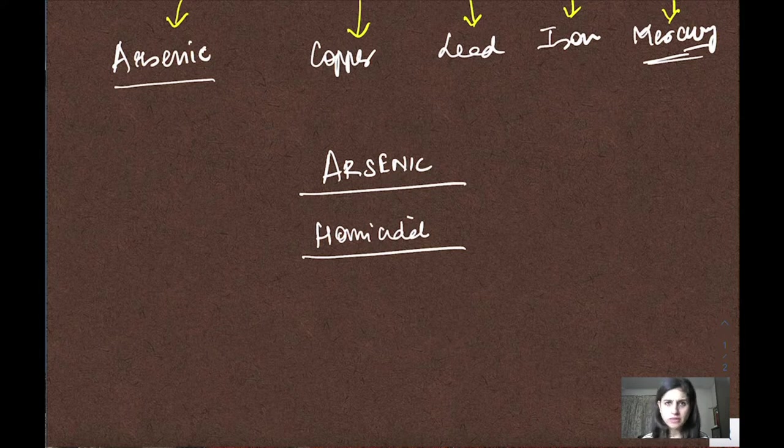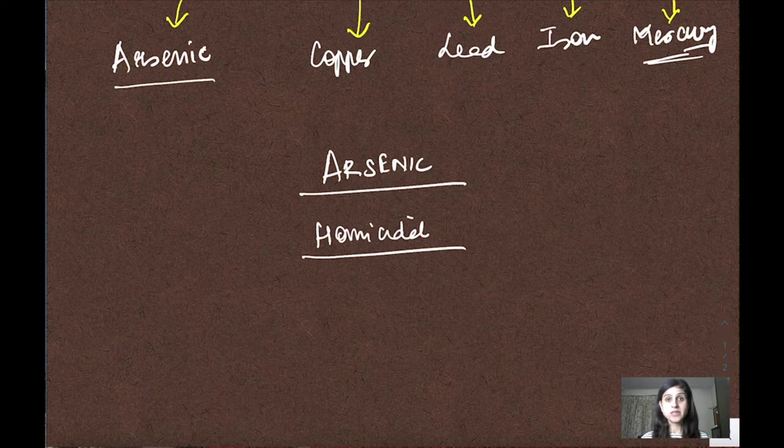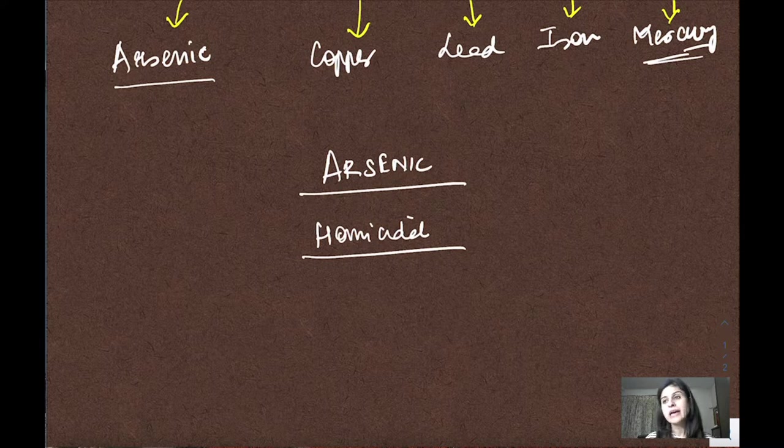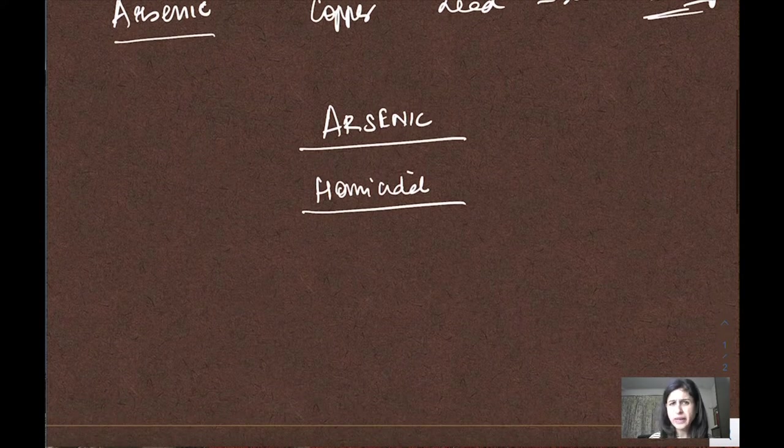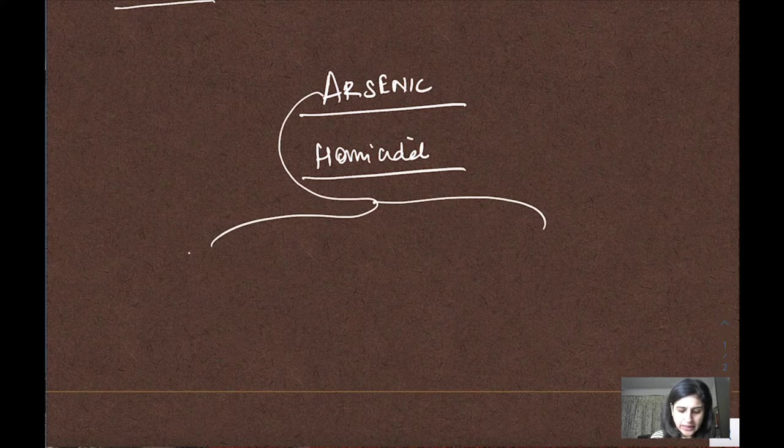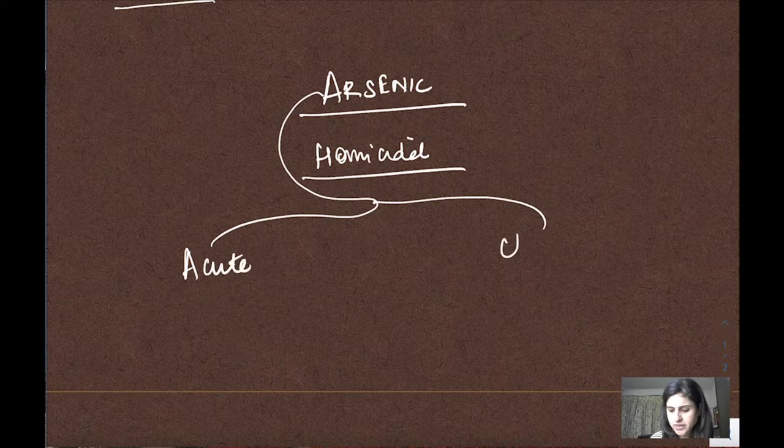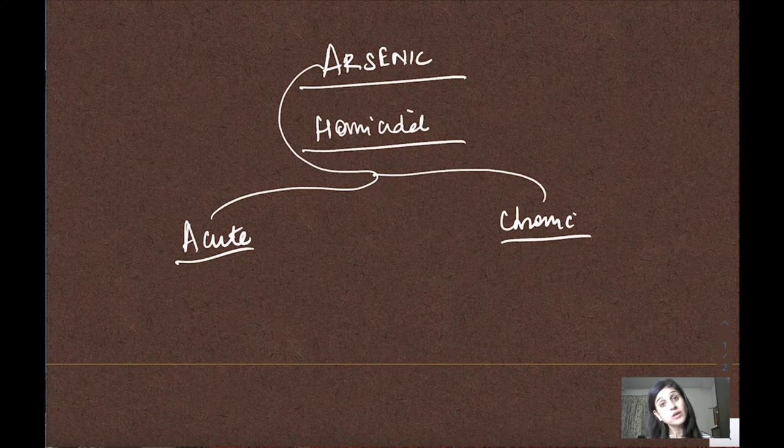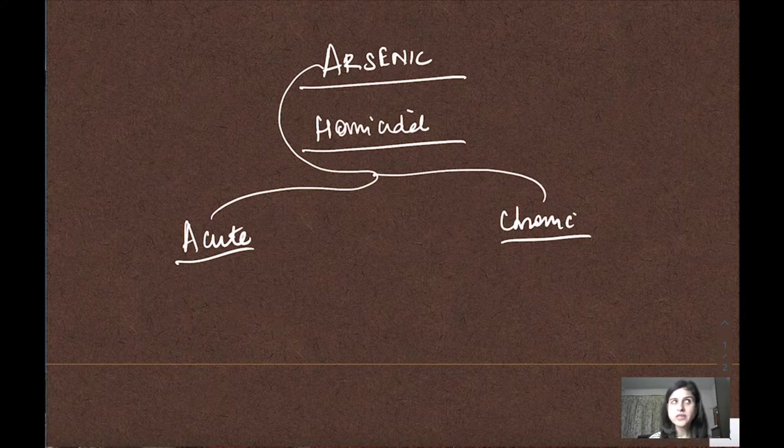If you know about Napoleon Bonaparte, he was bedridden and died. It was suspected he was poisoned with arsenic - slow poisoning where small amounts were put in his food or water. He suffered and ultimately died. It has medical legal aspects. Arsenic poisoning can present with acute symptoms at higher doses or chronic symptoms. Acute symptoms are like cholera.